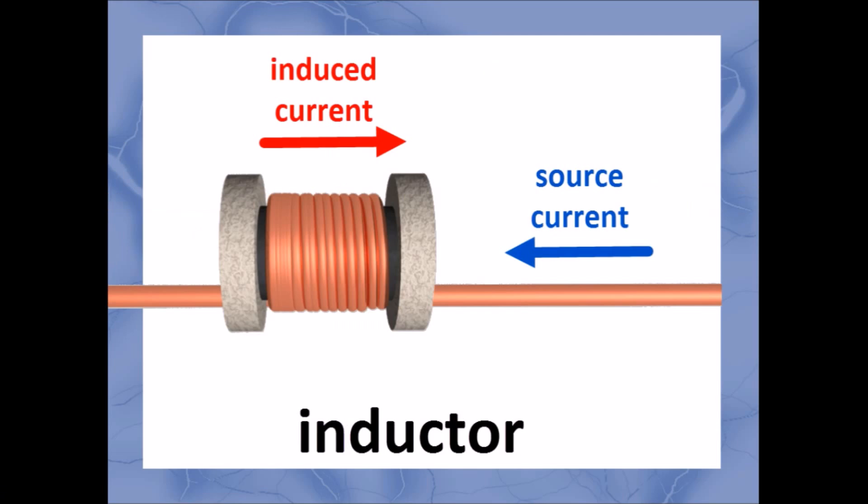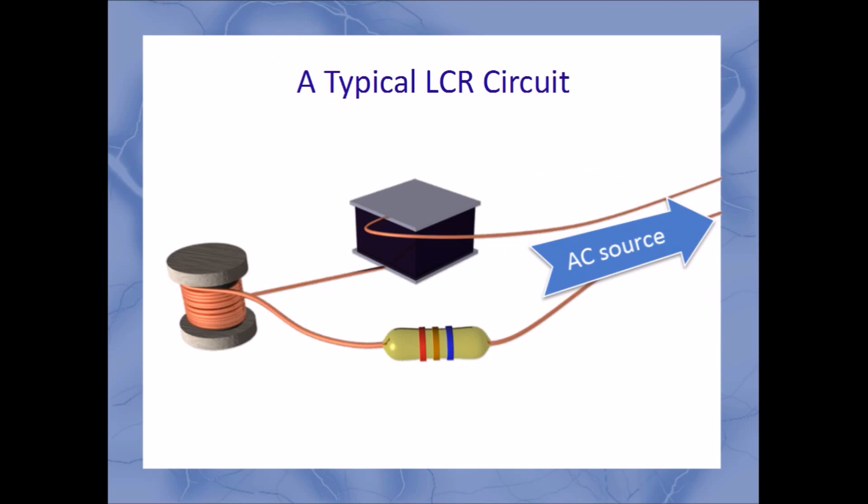And an inductor, according to the laws of Lenz and Faraday, opposes any change in the amount of current through it. This you should be familiar with by now. So if you take each of these components and plug them into a source of alternating current, as I've done here, they all oppose or impede the current.